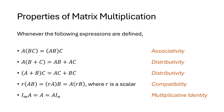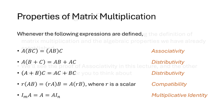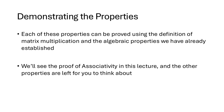This multiplication has some nice algebraic properties that we've seen before: associativity, distributivity, compatibility, and a multiplicative identity matrix. We can prove these theorems using the definition of matrix multiplication and previously discussed algebraic properties. Let's walk through the proof of associativity — all these proofs are pretty similar to what we're about to see.